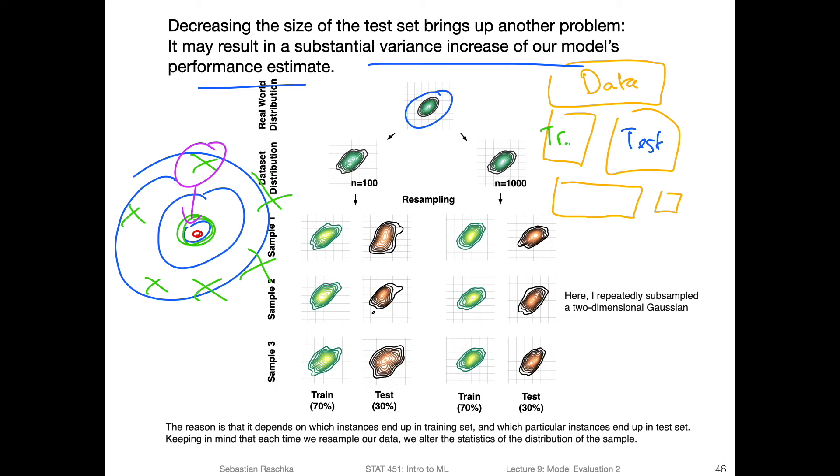So in that case, that is also an issue if we have an estimate and it's not reliable because the variance is so large. So here I'm kind of illustrating that using a two-dimensional Gaussian, a multivariate Gaussian distribution that I sampled from. So here I was drawing on the left hand side 100 data points from this distribution. And you can see the distribution, the shape of the distribution changes a little bit, the shape of the sample compared to the distribution. And then now, let's say I divided into 70% training data and 30% test data. I repeat this process three times. And every time you can see that the test set, especially because it's smaller than the training set, has a different shape. The shape differs substantially here.